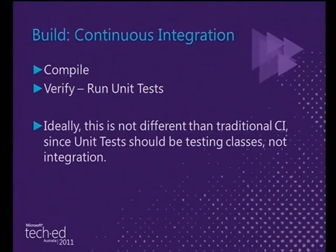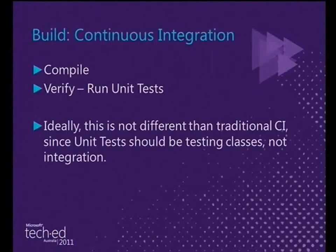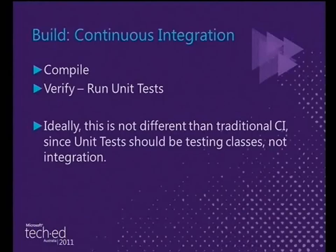Continuous integration is something most teams do — it's a great way of minimising the chance that a developer's check-in has broken things. CI normally consists of compiling and running unit tests. Unit tests by definition test the functionality of individual classes and methods, with all dependencies stubbed or mocked out. For a Windows Azure project, unit tests really shouldn't have any Windows Azure-specific stuff in them — those dependencies should all be mocked. You shouldn't even need to install the compute emulator or Azure SDK for CI to work.